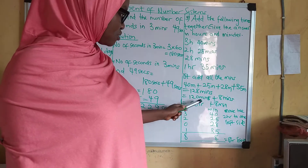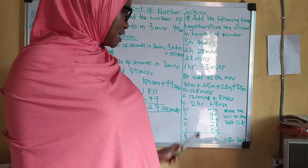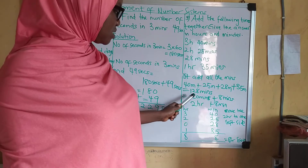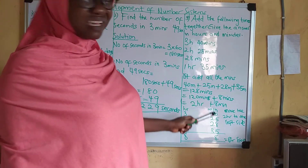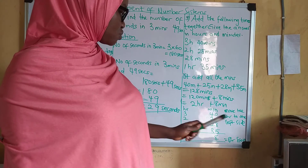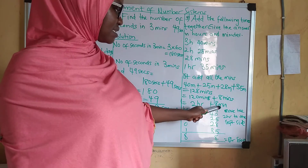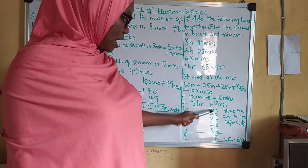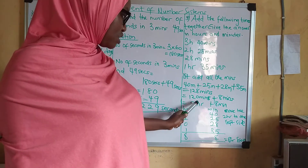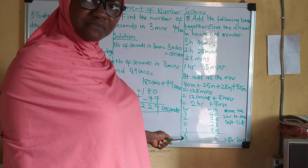Now, 128 minutes means 120 minutes plus 8 minutes. To change 120 minutes to hours, we divide 120 by 60, and that gives us 2 hours. So 120 minutes gives us 2 hours. You now add that 2 hours and keep the 8 minutes. This 8 minutes goes under the minutes column, and the remaining 2 hours you carry over to the hours side.